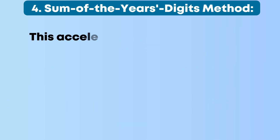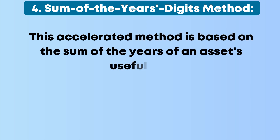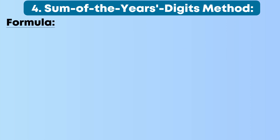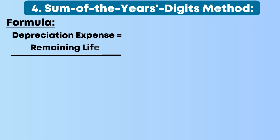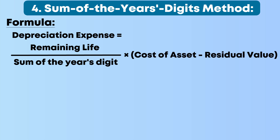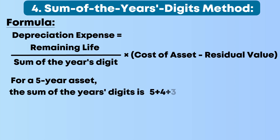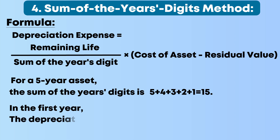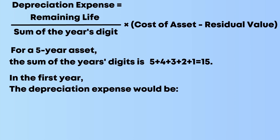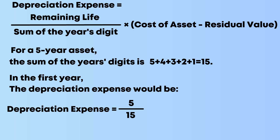4. Sum of the years' digits method: This accelerated method is based on the sum of the years of an asset's useful life. The formula is: Depreciation Expense = (Remaining Life ÷ Sum of the Years' Digits) × (Cost of Asset − Residual Value). For a five-year asset, the sum of the years' digits is 5+4+3+2+1 = 15. In the first year, the depreciation expense would be: (5 ÷ 15) × ($10,000 − $1,000) = $3,000.